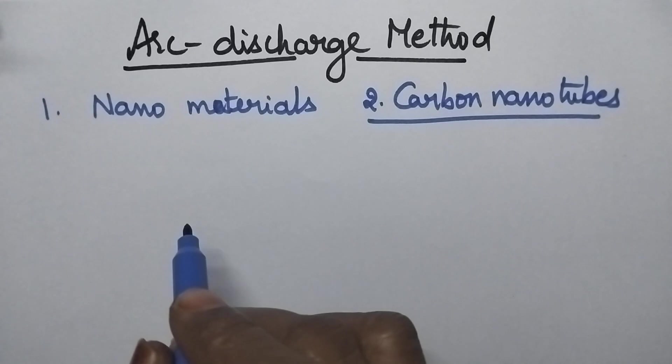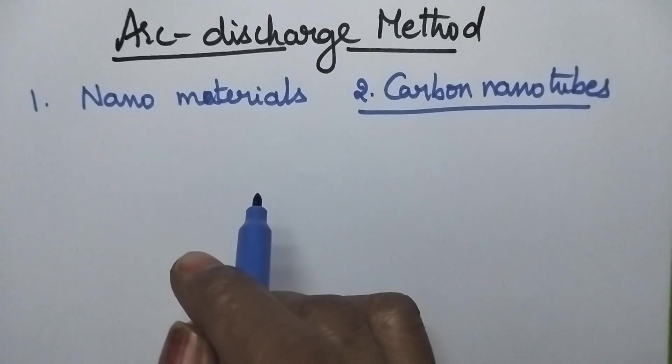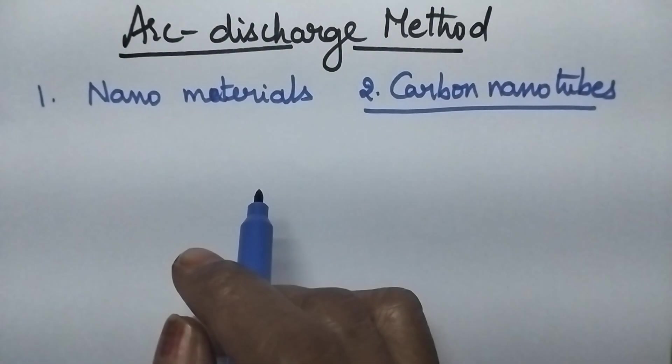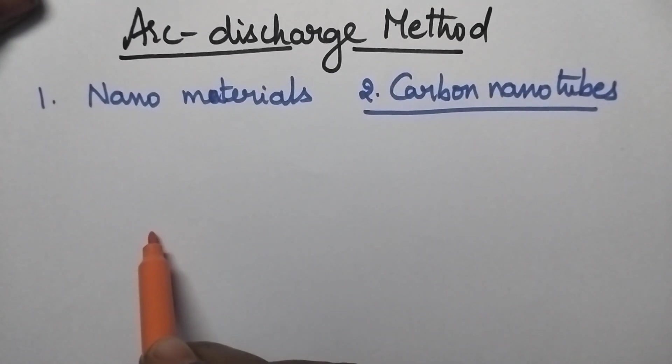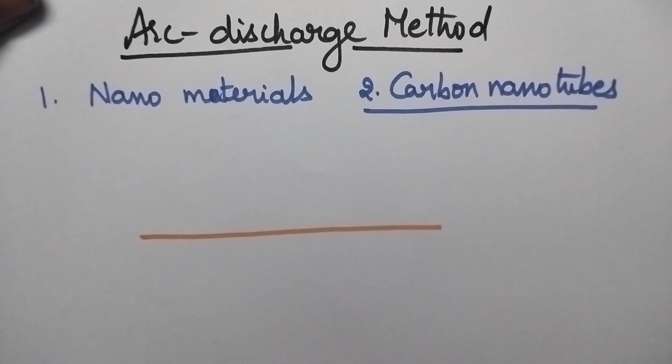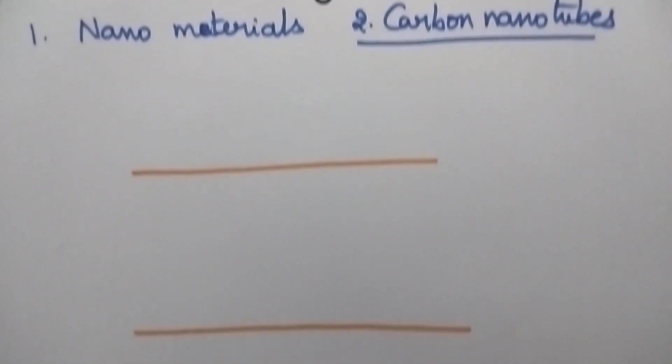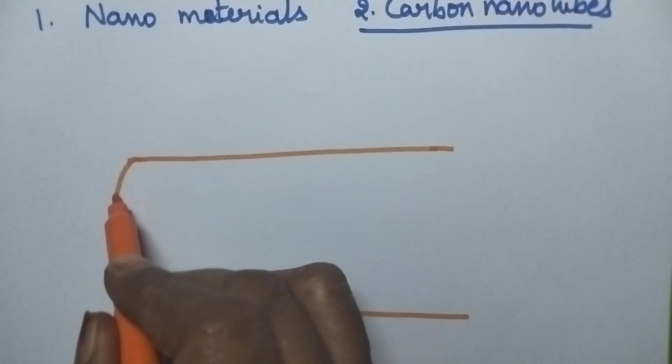Coming to the description of the arc discharge method: it consists of two graphite rods separated by 1mm distance.